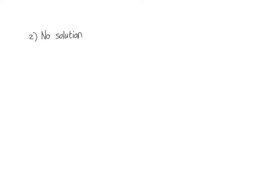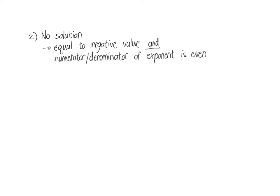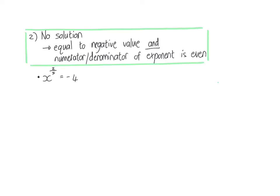The second special case is when there is no solution. This happens when the expression is equal to a negative value and either the numerator or denominator of the exponent is even. In this case you can immediately write there is no solution because you can clearly see that the numerator is even and it is equated to a negative value. The reason is that any value to the power of an even number cannot be negative, and the same goes for any even type of root — it can never give you a negative value. So whether it's an even numerator or an even denominator in the exponent, it cannot equal a negative value.